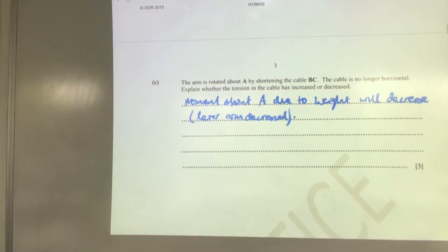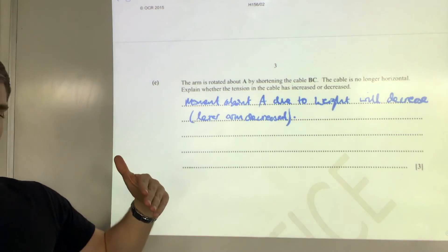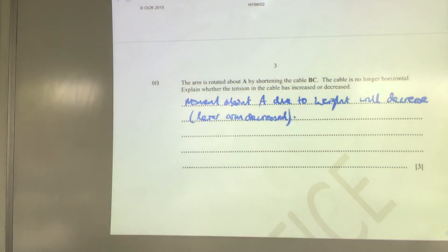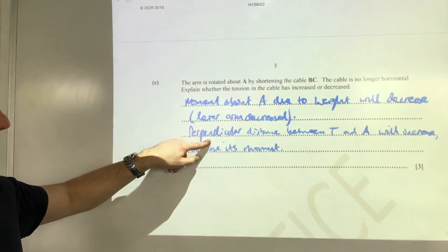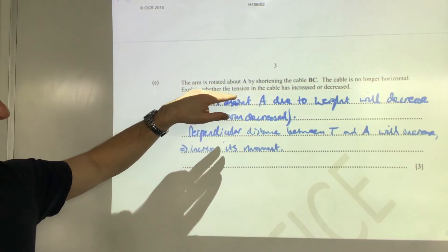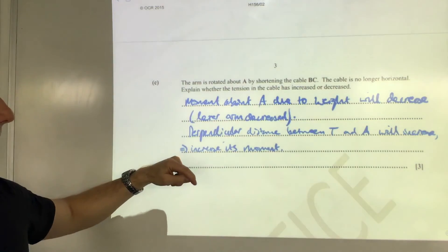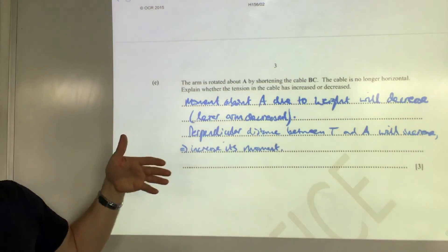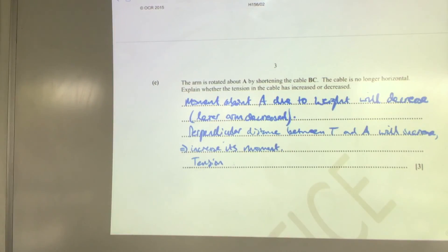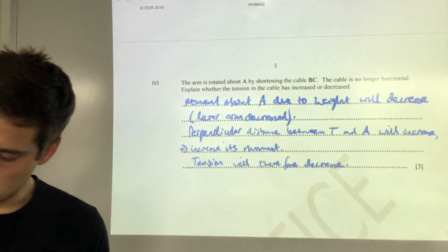Although only a component will be acting to produce the moment, it's hard to know whether that will negate this, but nonetheless, the perpendicular distance between T and A will increase, which will therefore increase its moment. That will mean that the tension can decrease for both of these causes, because there's less moment to provide to counter the weight and it's got a bigger lever arm. That means the tension will decrease. Those are our three points there, achieving us the three marks, and that's question one.